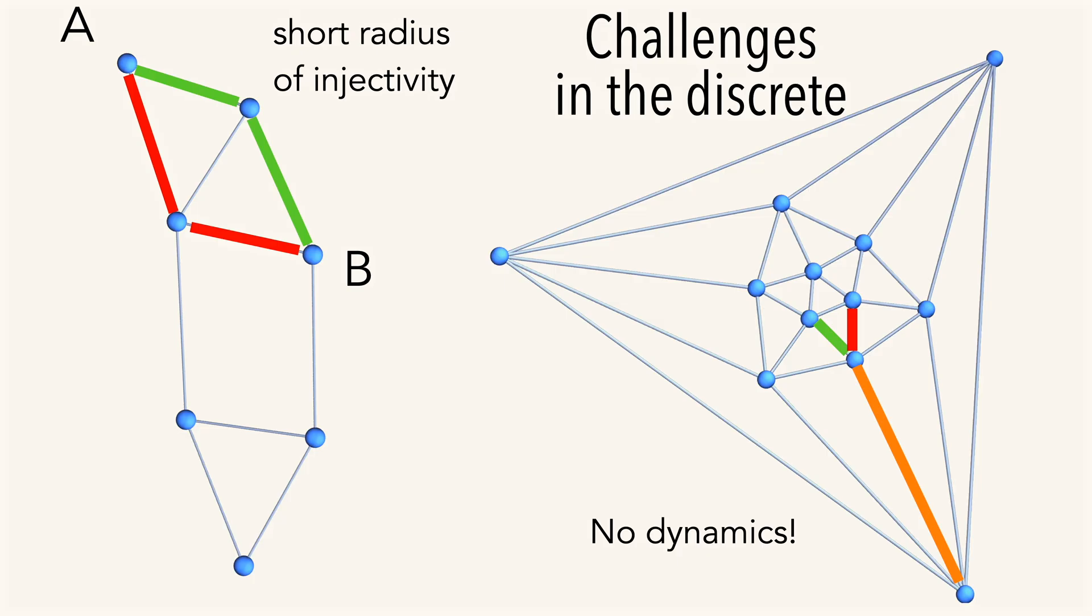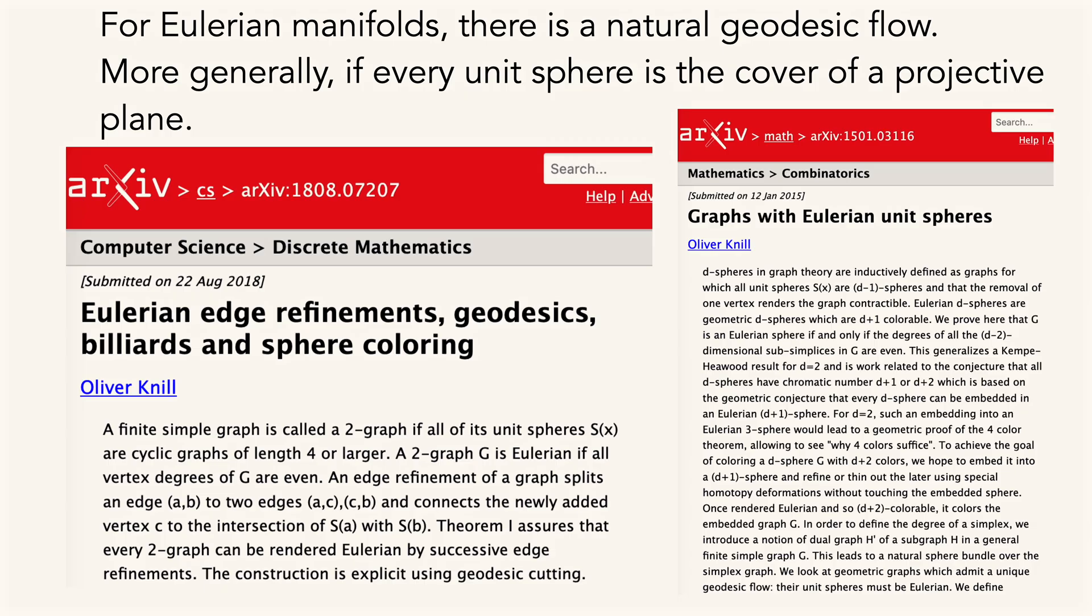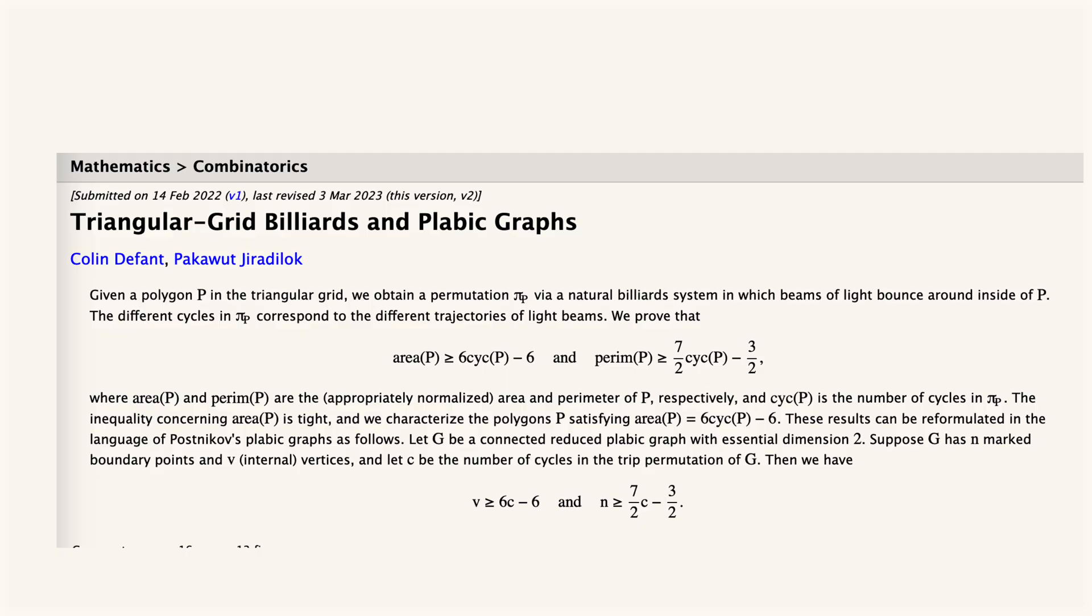One of the fundamental challenges for usual naive geodesics is that there is always a very short radius of injectivity, and also that we don't have a dynamics. A couple of years ago, I worked on a geodesic flow in the discrete where we have the possibility to continue in a natural way, so-called Eulerian graphs.